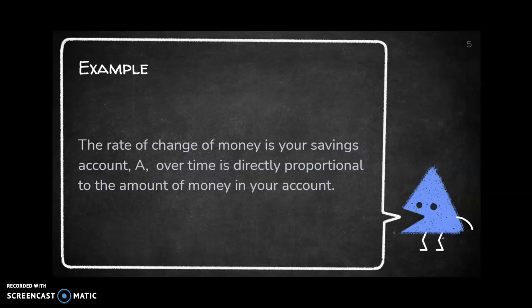Here's an example of writing from words: 'The rate of change of money in your savings account over time is directly proportional to the amount of money in your account.' The money amount is 'a', so the rate of change of money over time equals some constant of proportionality times the amount of money in the account, which is 'a'.